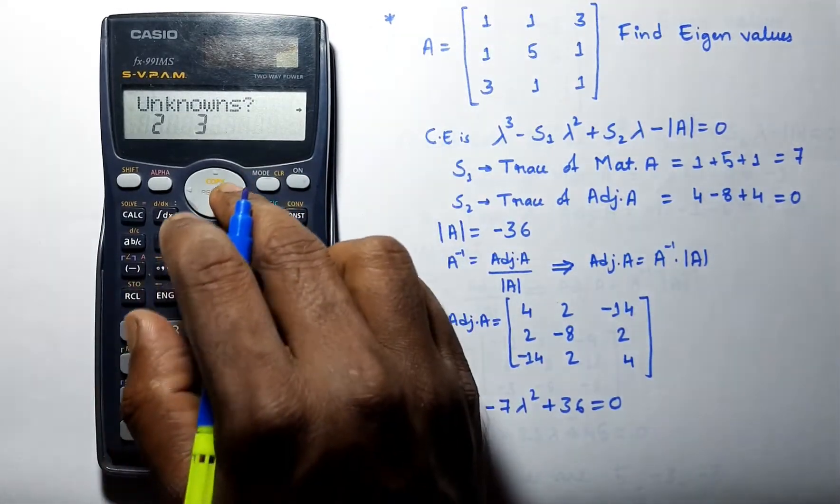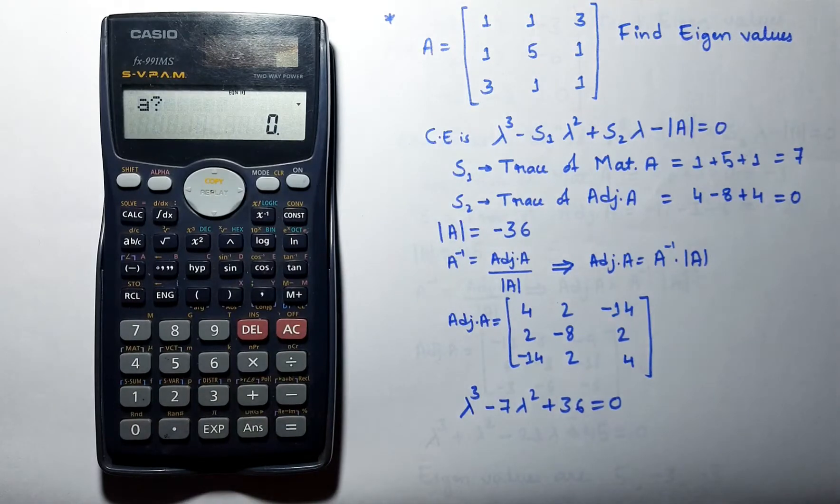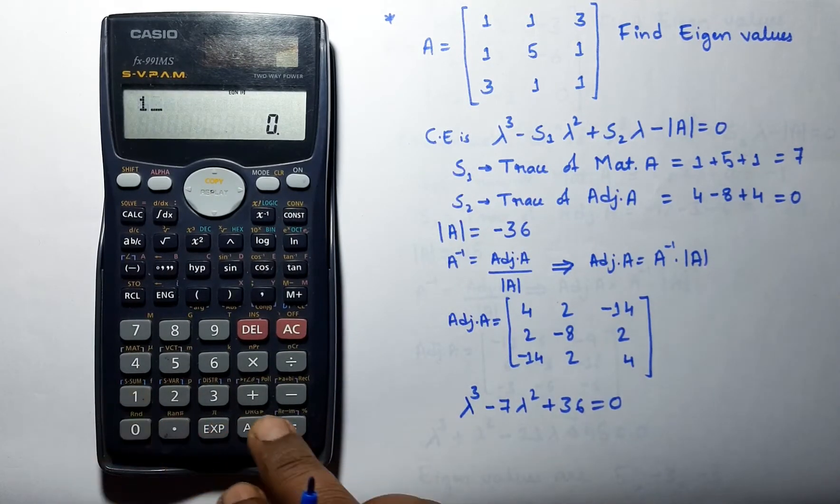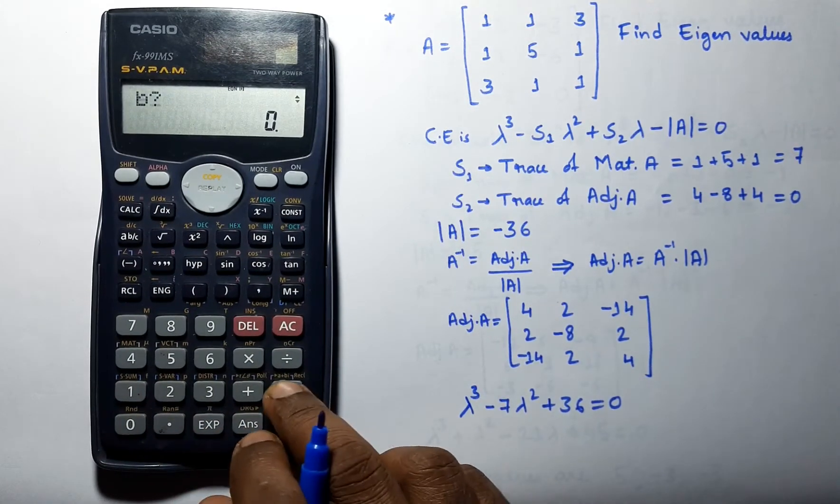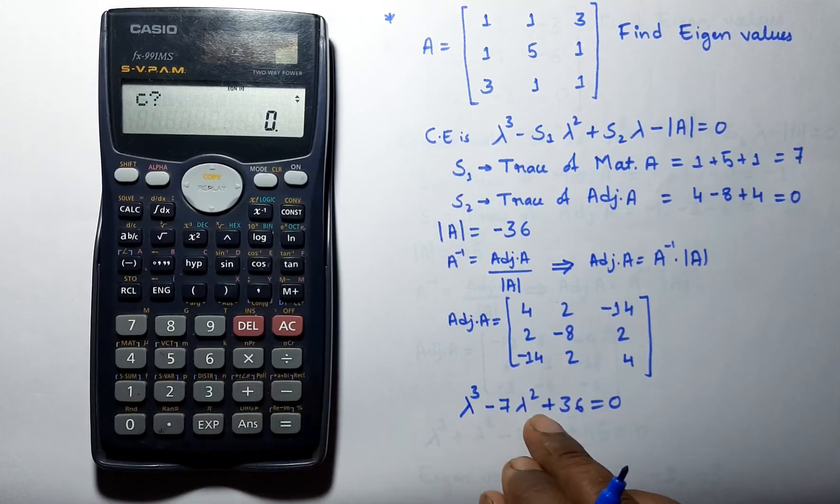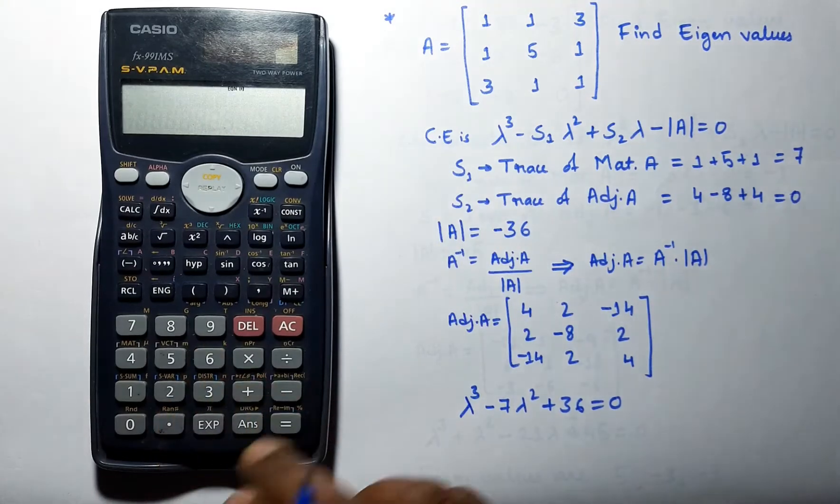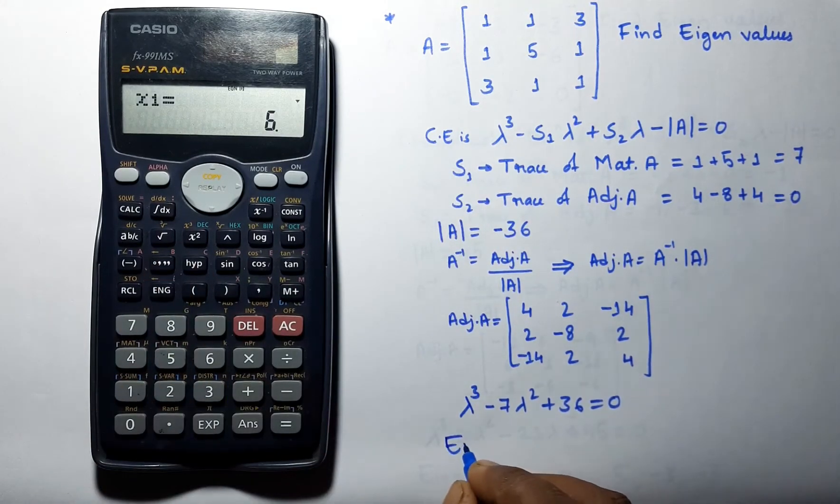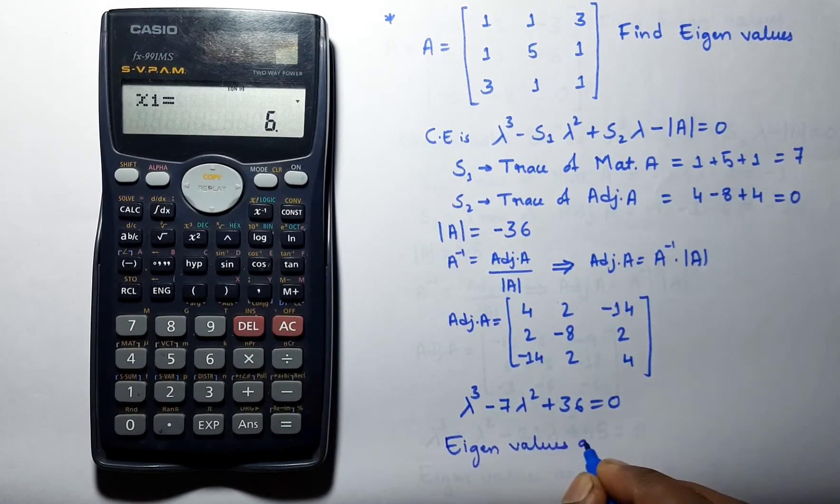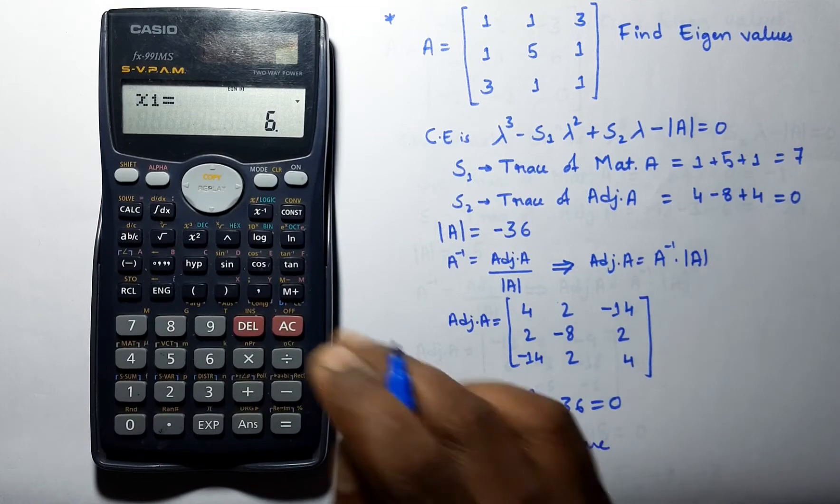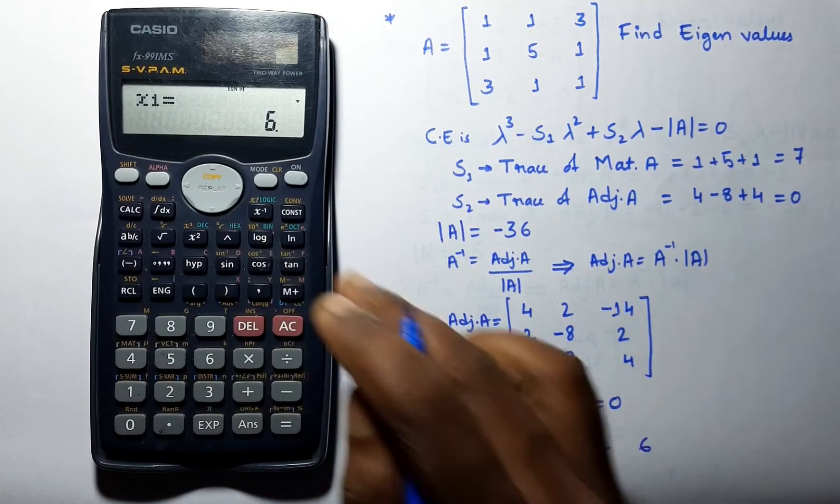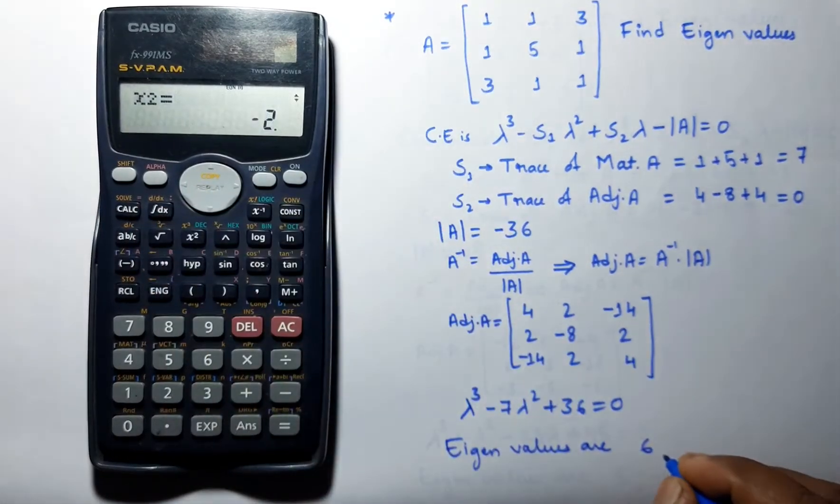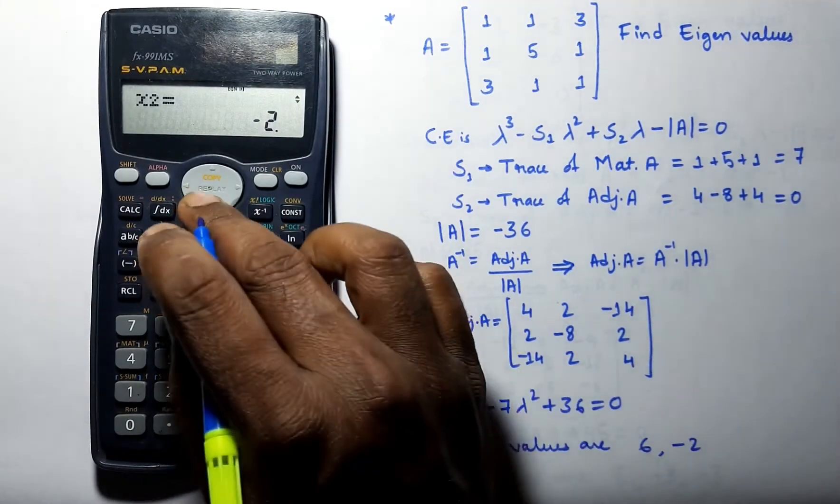Now we go to equations and select degree as 3, and enter the coefficients: 1, minus 7, 0, and 36. These are our eigenvalues, which are 6, minus 2, and 3.